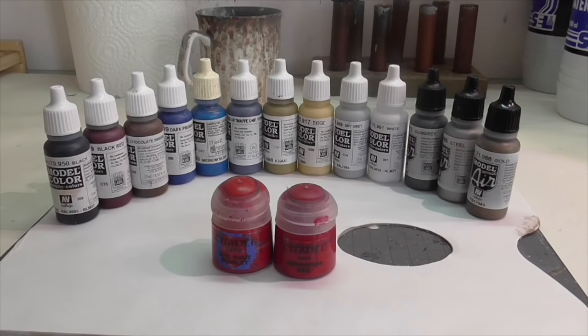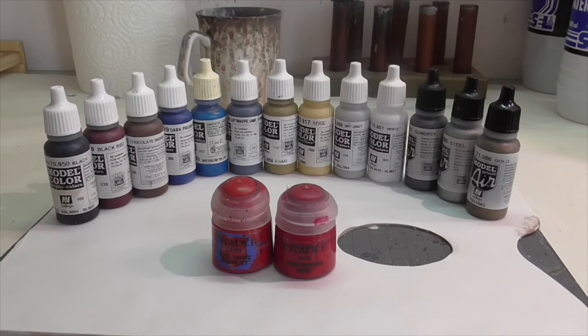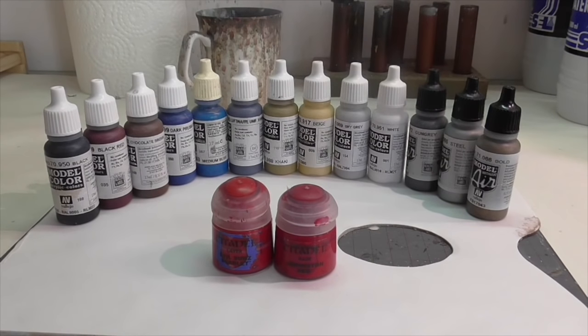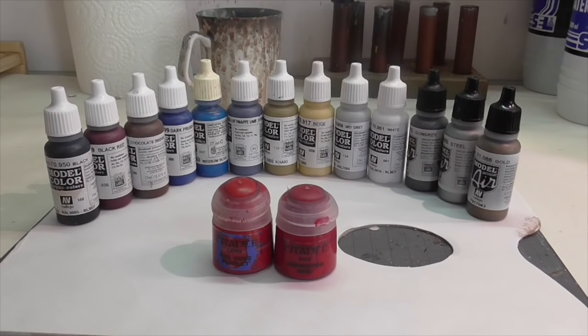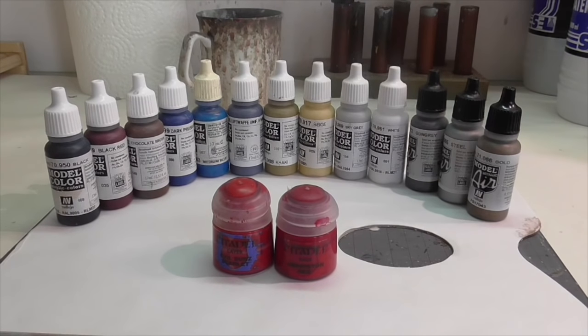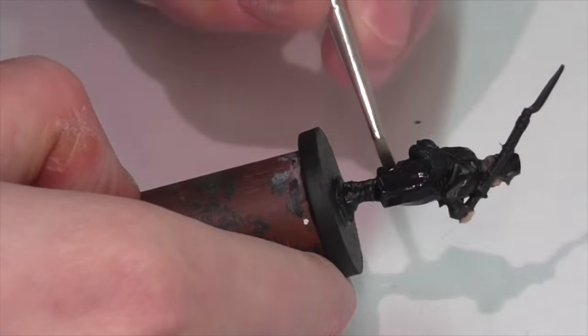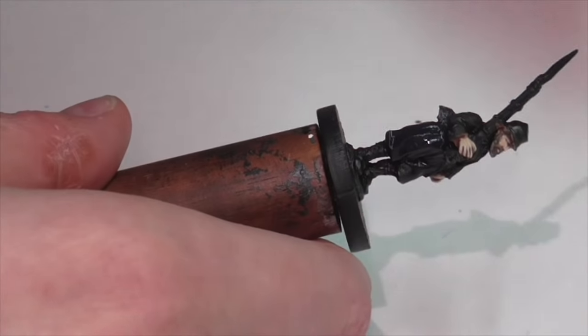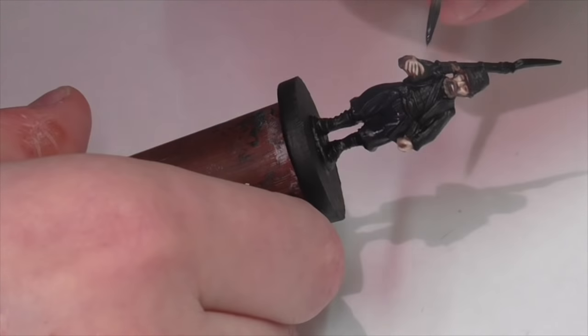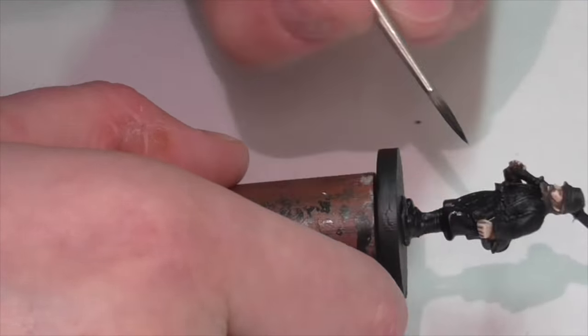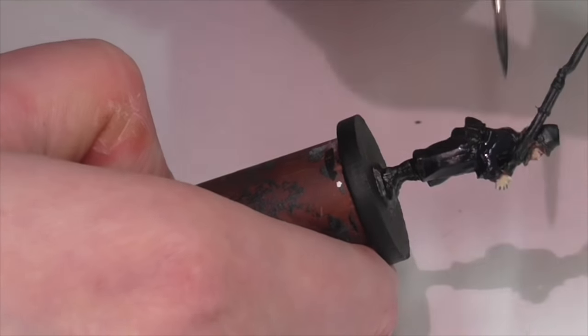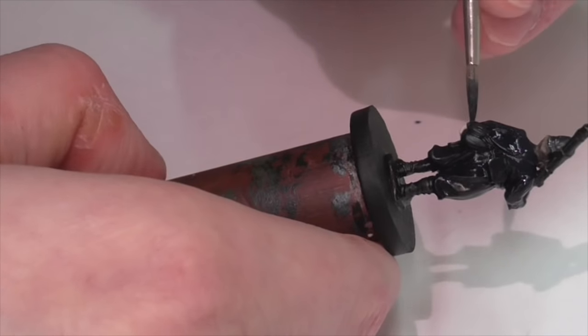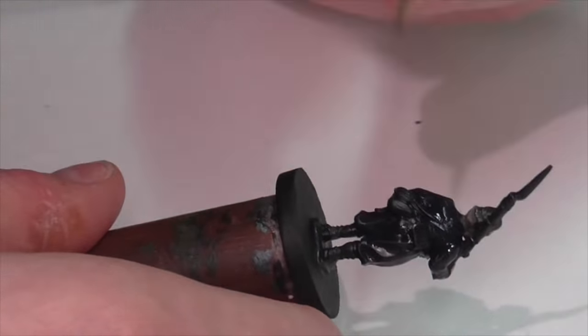So, as usual, here are all the paints that you're going to need to complete this model except for what I used on the face, hands, and hair. Those are not included here. I'm going to start off by base coating. The majority of the uniform is going to be a dark blue shade. That's his pants, his over jacket, and a band on his hat. I'm using here a mixture of black and dark Prussian blue for my base layer.